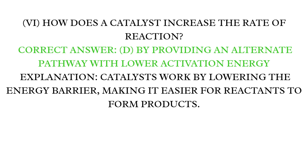MCQ 6: How does a catalyst increase the rate of reaction? Correct answer: D — By providing an alternate pathway with lower activation energy. Explanation: Catalysts work by lowering the energy barrier, making it easier for reactants to form products.